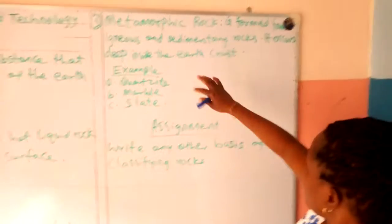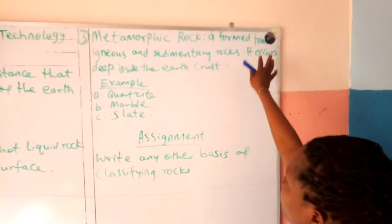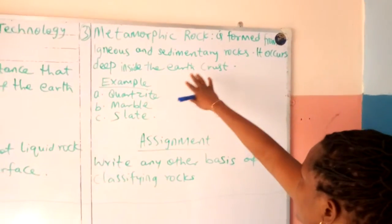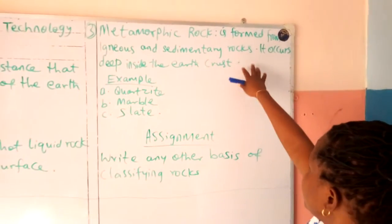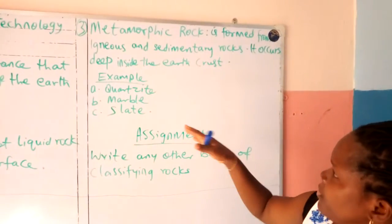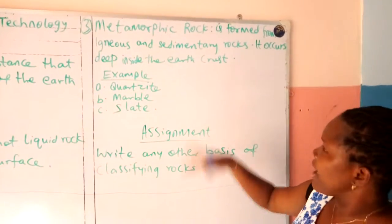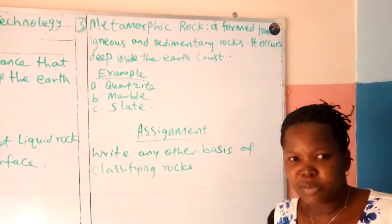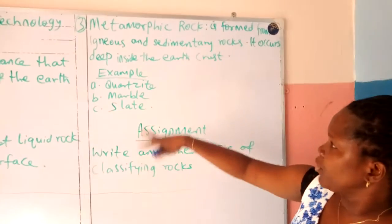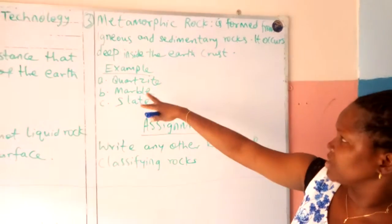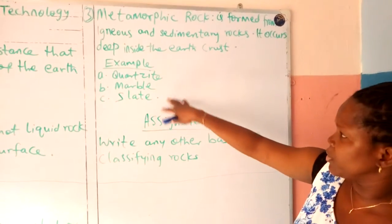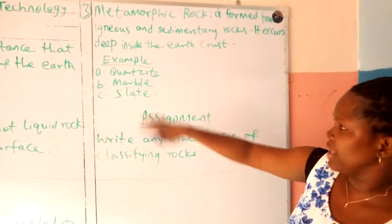Number three: metamorphic rock is formed from igneous and sedimentary rocks. It occurs deep inside the earth's crust — that is the hard part of it. Examples include quartzite, marble, and slate.